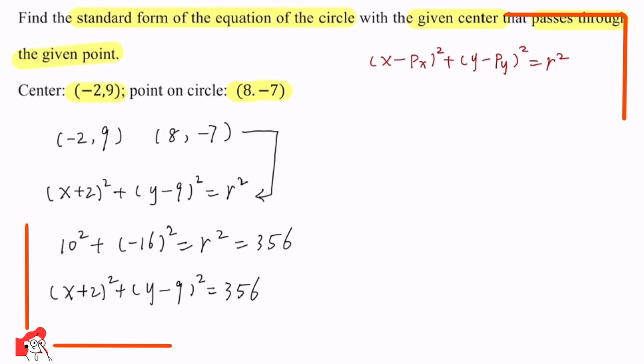Now let's look back at the whole process. Can we conclude any takeaways from this question? First, we should know the standard form equation of a circle: (x − h)² + (y − k)² = r². And how do we find r²? We substitute the point on the circle into the equation to get r².